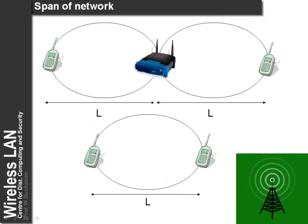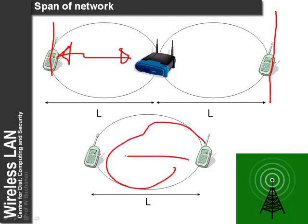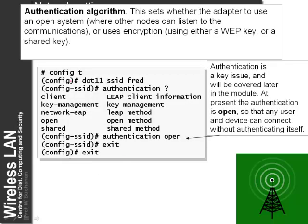For the span of the network the maximum length is L, so the span of an access point network will be 2L. For an ad hoc network the span will only be L. Along with this we can define the authentication method — either LEAP, open, or shared keys — defined in the SSID configuration.